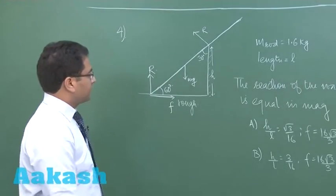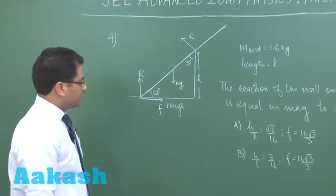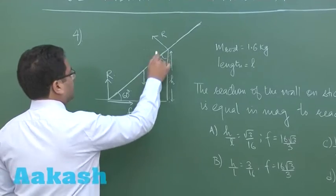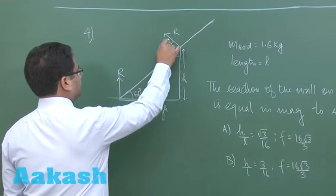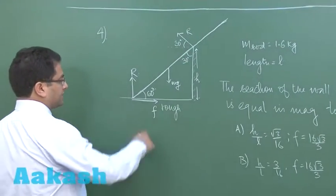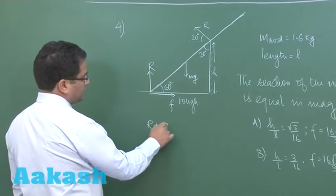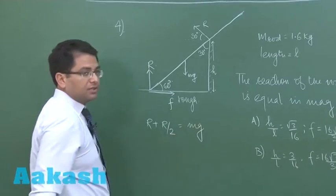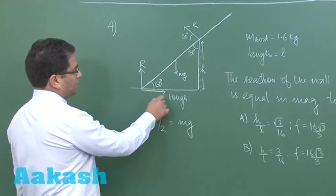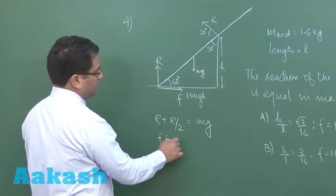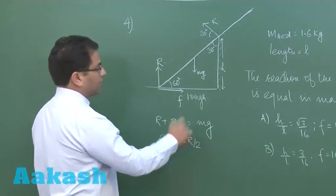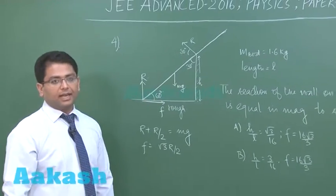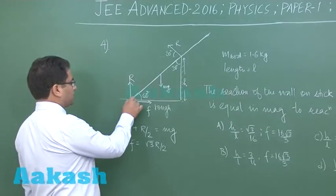Now let's try to solve it first seeing the translational part. If you see this is 30 degrees, let's see the vertical part: R plus R sin 30 would be equals to Mg. Let's see the horizontal part: this friction F would be equals to R cos 30, which is root 3 R by 2.